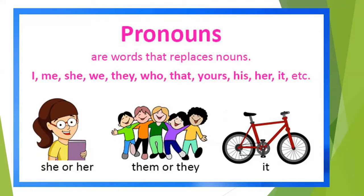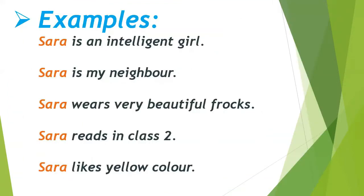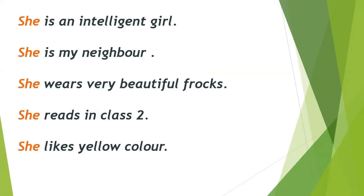For example: 'Sarah is an intelligent girl. Sarah is my neighbor. Sarah wears very beautiful frocks. Sarah reads in class 2. Sarah likes yellow color.' It does not feel good to use the noun 'Sarah' again and again. That is why we use 'Sarah' the first time, but afterwards we use 'she' instead — 'She is an intelligent girl. She is my neighbor. She wears very beautiful frocks. She reads in class 2. She likes yellow color.'